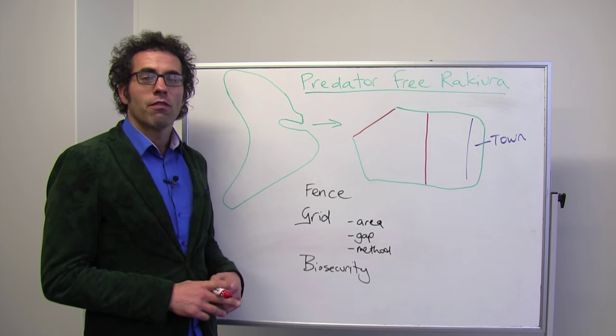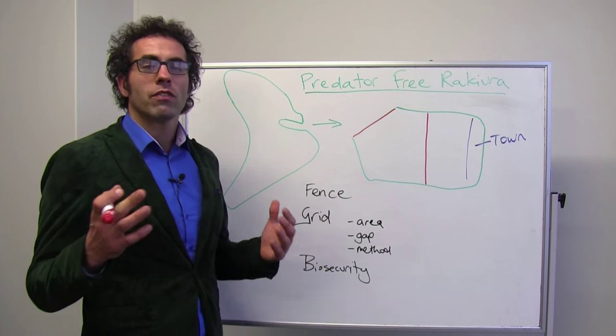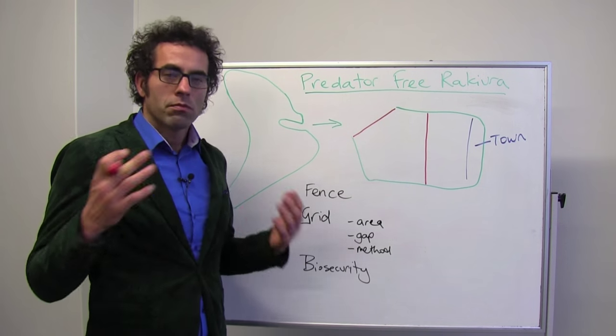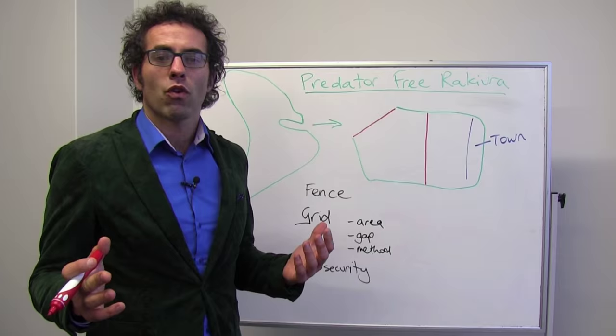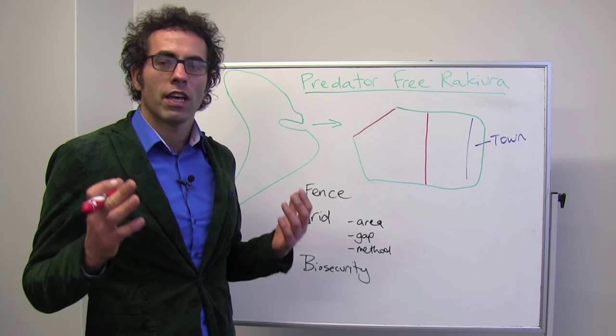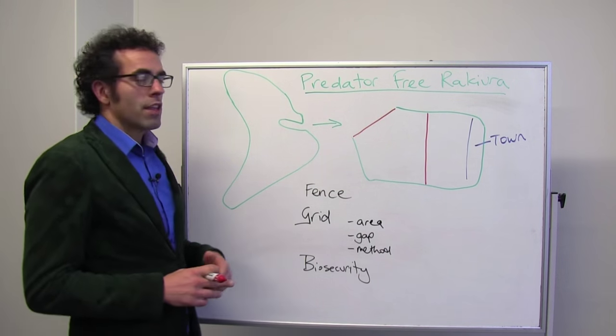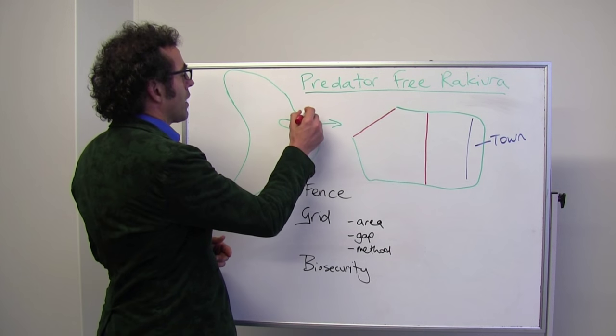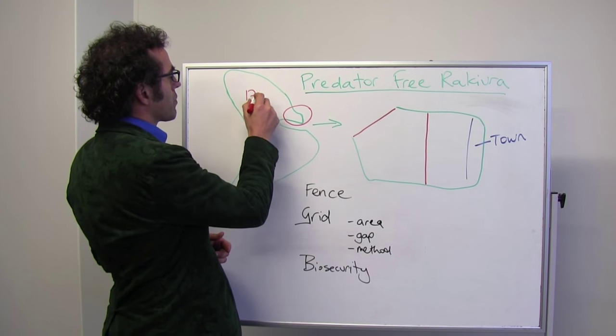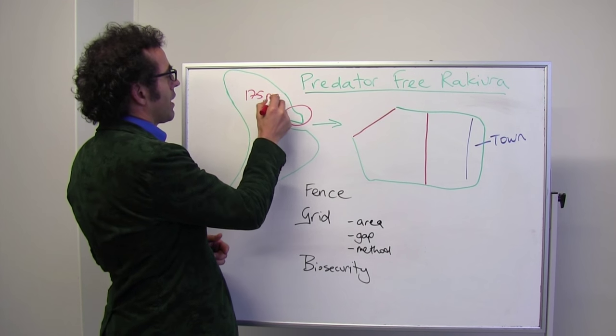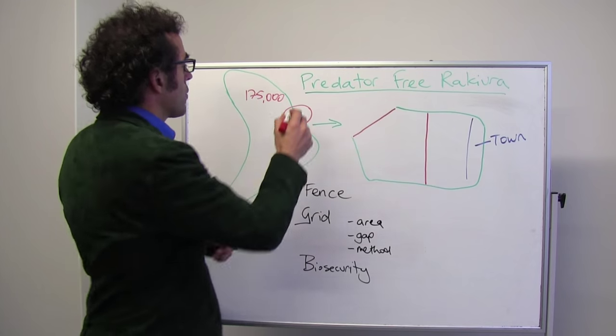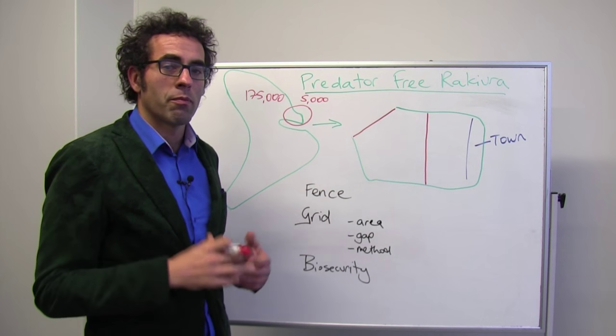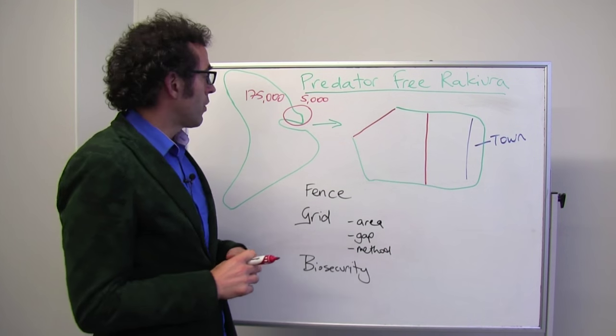This is my bad picture of Rakiura. But what we're going to do in this Whiteboard Friday is just look really quickly at some of the costs of the overall project so you get an idea for the issues that are still in front of us. Yes, this is my really bad picture of Rakiura, but what we're looking at at this point, instead of the 175,000 hectares across the whole island, we're just looking at this 5,000 hectares where the town of Oban is, where all of the people that live on Rakiura live.